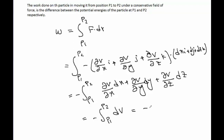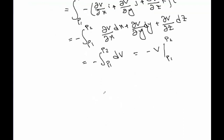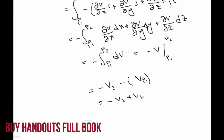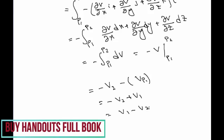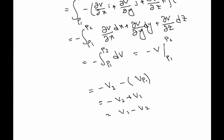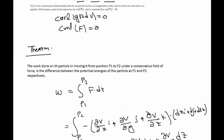When we integrate this, it becomes v evaluated from p1 to p2. Now v is the potential energy, so the potential energy at point p2 is v2 and at point p1 is v1. This can be written as minus v2 plus v1, which equals v1 minus v2. So we have proved that the work done on the particle is the difference between the potential energies at the two points.